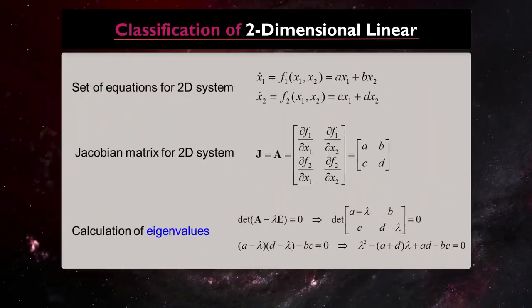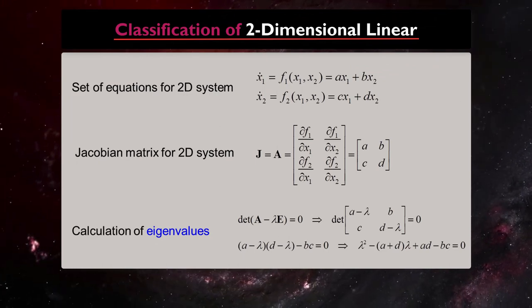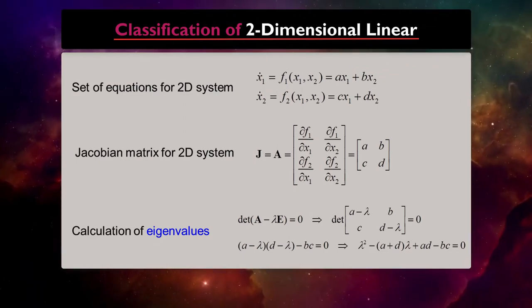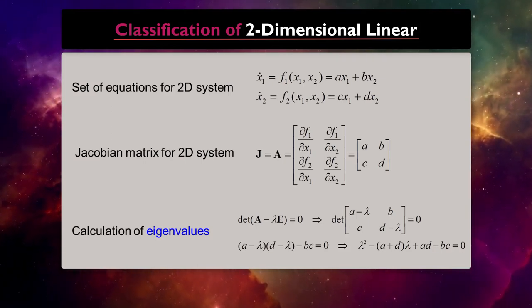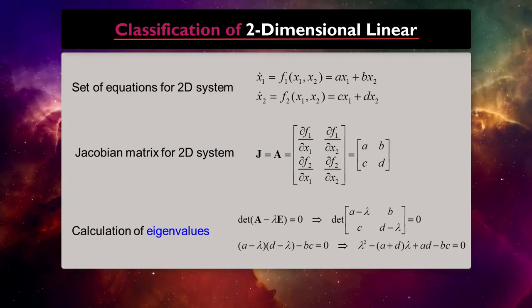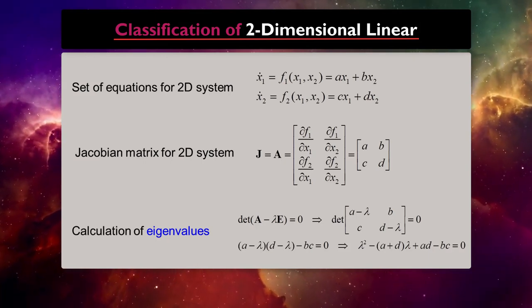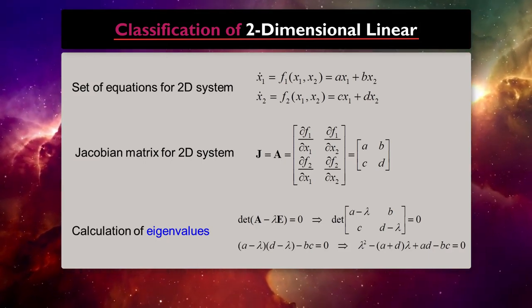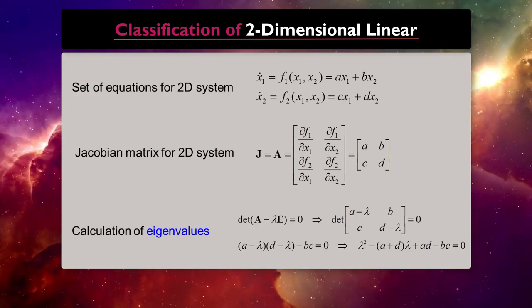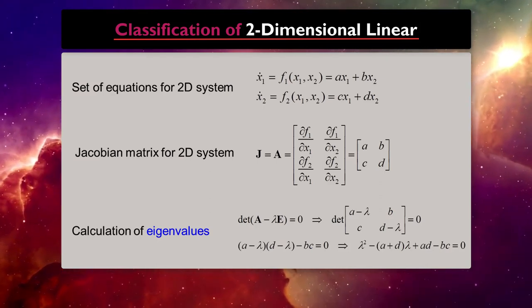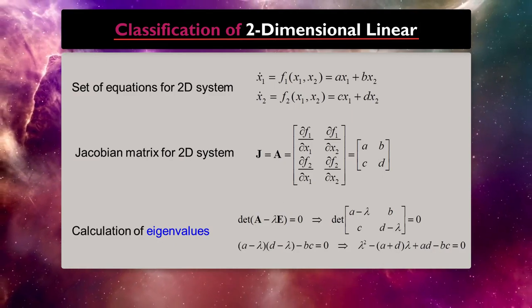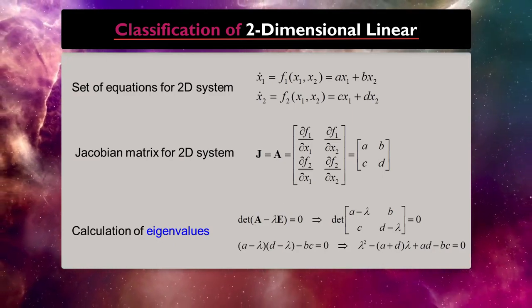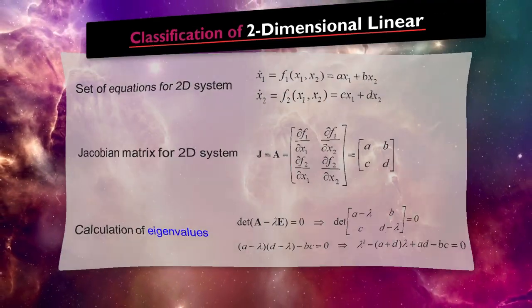For classifying fixed points of a two-dimensional linear dynamical system, we need to calculate the Jacobian. If we have fixed points x0 and we want to know about its stability, we can calculate the Jacobian of the system at x0, and then we calculate the eigenvalues and eigenvectors of J at these specific fixed points.